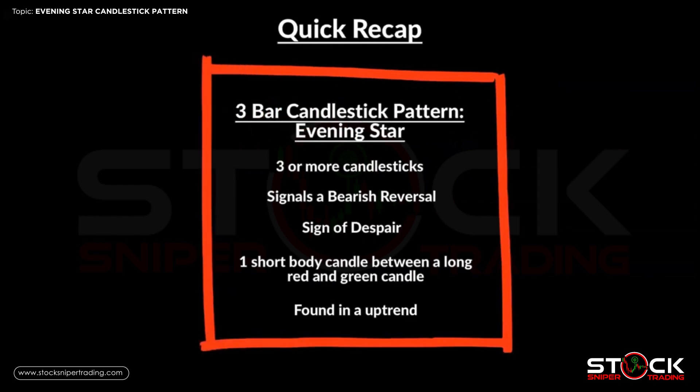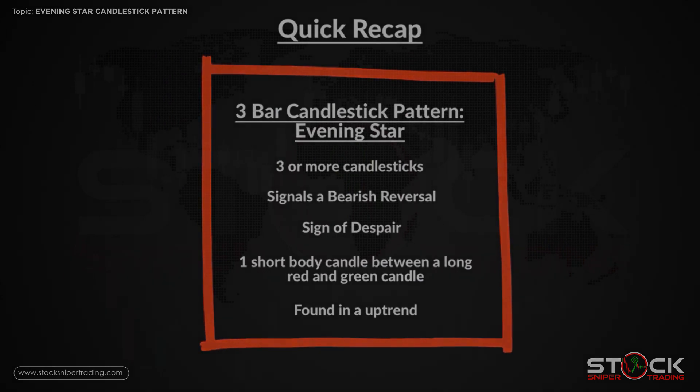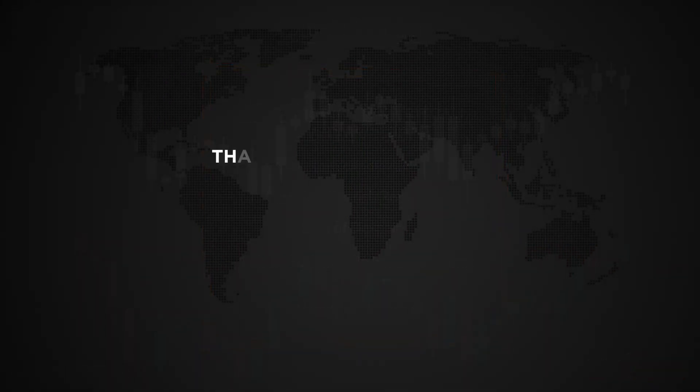A quick recap: the evening star candlestick pattern is a bearish pattern consisting of three or more candlesticks. It is a bearish reversal from a bullish uptrend and a sign of despair in a bullish market. It consists of one short-body candle — a doji or spinning top — between a long red and green candle, and is usually found in an uptrend at a level of resistance. We hope you enjoyed this tutorial on the evening star candlestick pattern. On our next tutorial we will introduce three white soldiers.